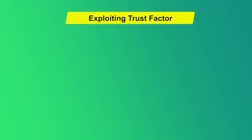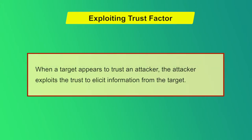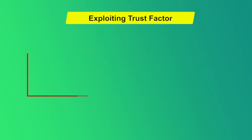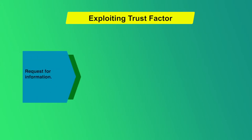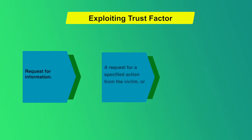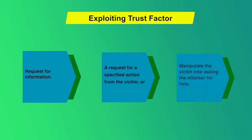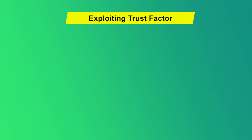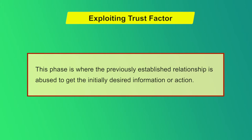The third step is Exploiting Trust. When a target appears to trust an attacker, the attacker exploits that trust to elicit information from the target. This can take the form of a request for information, a request for a specified action from the victim, or alternatively manipulating the victim into asking the attacker for help. This phase is where the previously established relationship is abused to obtain the initially desired information or action.